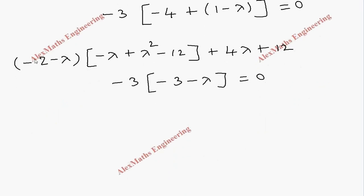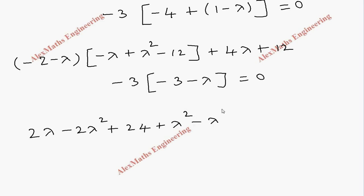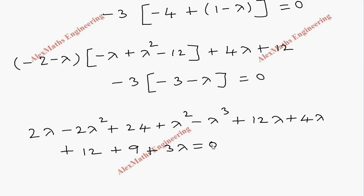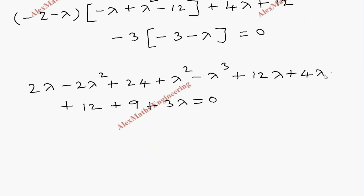Now multiplying minus 2 inside gives 2 lambda minus 2 lambda squared plus 24. Multiplying minus lambda inside gives plus lambda squared minus lambda cubed plus 12 lambda. Then we have plus 4 lambda plus 12, and multiplying minus 3 inside gives plus 9 and plus 3 lambda, equal to 0.